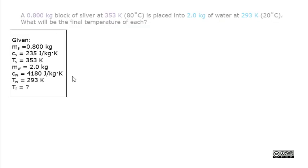Here we have the given box. The mass, the specific heat capacity, and the initial temperature of both silver and water is given. We want to find the final temperature.